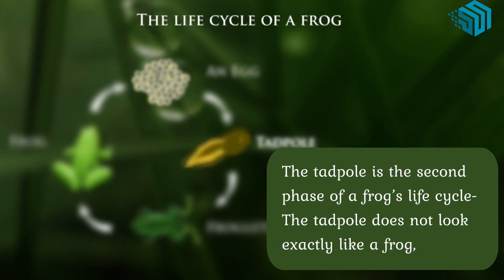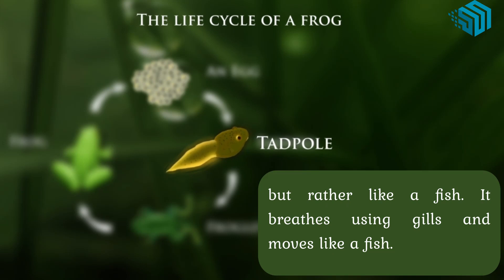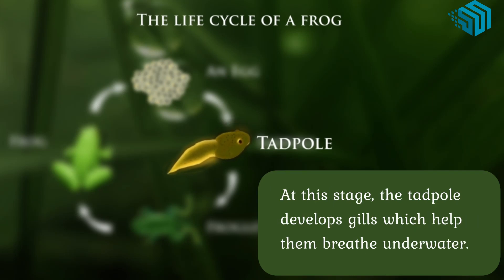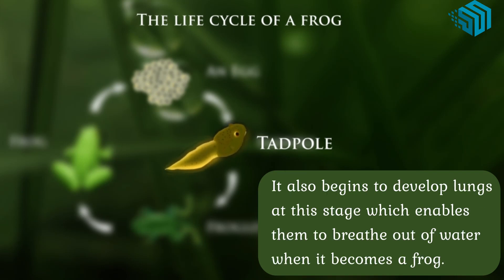The tadpole is the second phase of a frog's life cycle. The tadpole does not look exactly like a frog but rather like a fish. It breathes using gills and moves like a fish. At this stage, the tadpole develops gills which help it breathe underwater. It also begins to develop lungs at this stage, which enables it to breathe out of water when it becomes a frog.